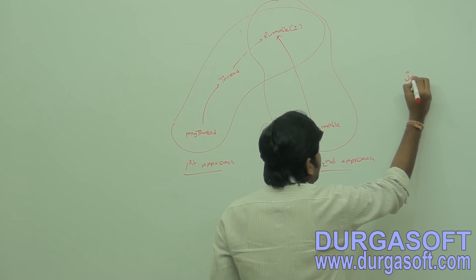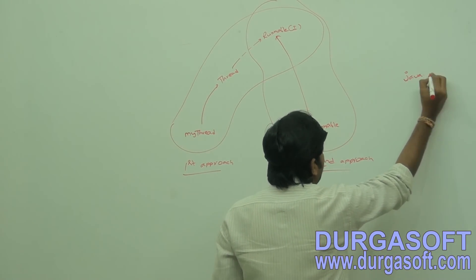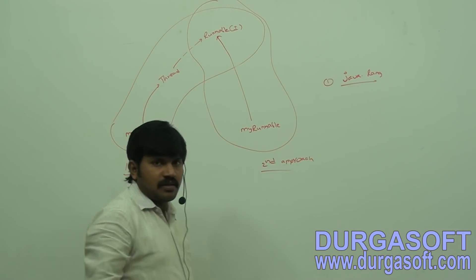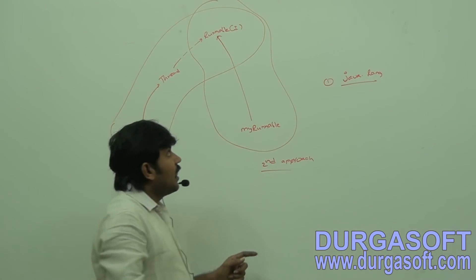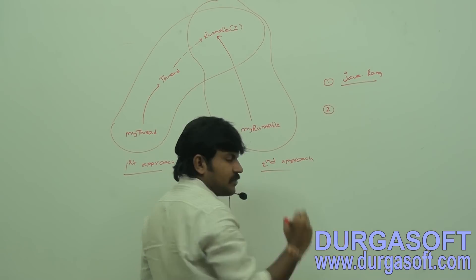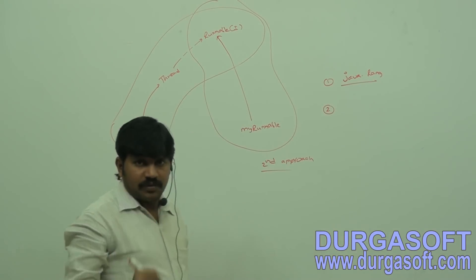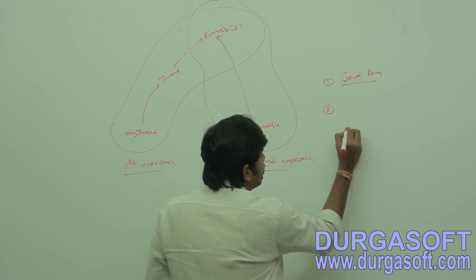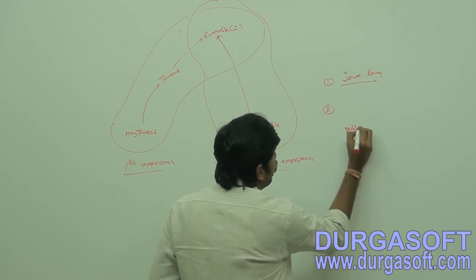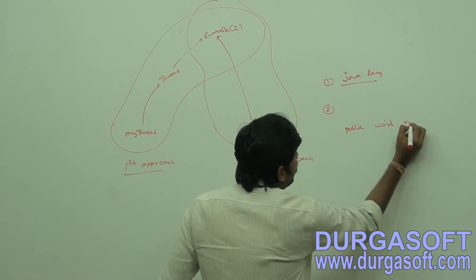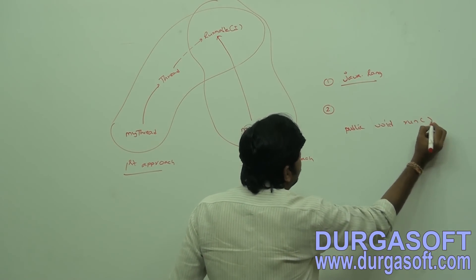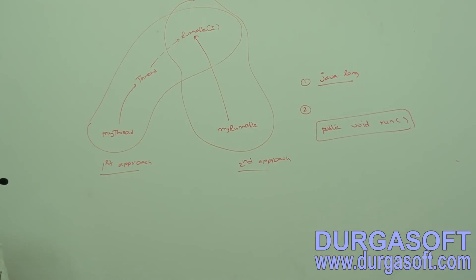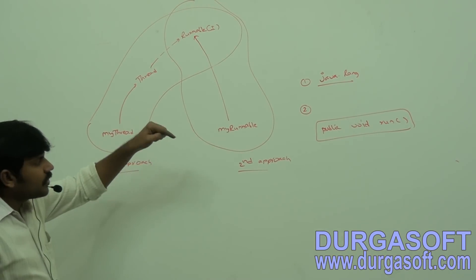The Runnable interface is present in the java.lang package. Under the Runnable interface, there is only one method — the public void run method. That's all it contains.